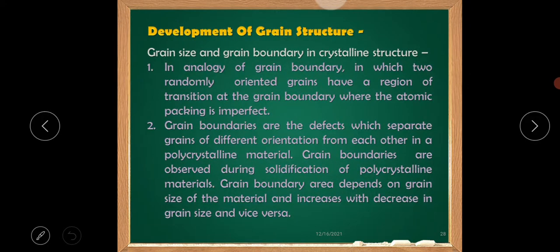Development of grain structure. Grain size and grain boundary in crystalline structure. In analogy of grain boundary in which two randomly oriented grains have a region of transition at the grain boundary where the atomic packing is imperfect. Grain boundaries are the defects which separate grains of different orientations from each other in a polycrystalline material. Grain boundaries are observed during solidification of polycrystalline material. Grain boundary area depends on grain size of the material.